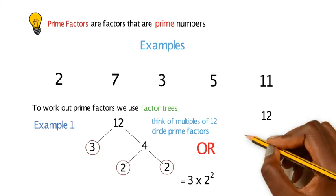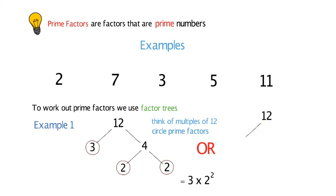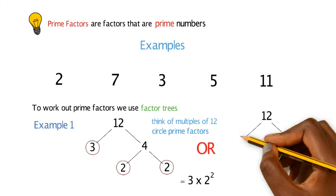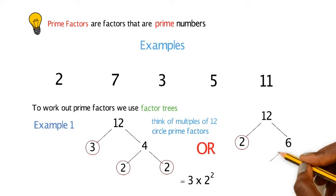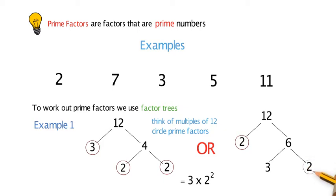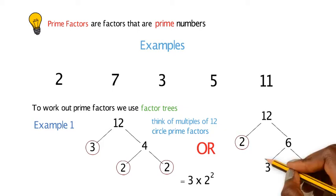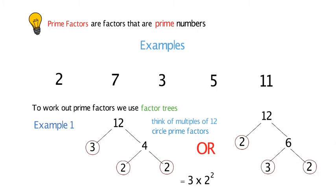Again, if we have 12, factors of that could be 2 and 6. Again, 2 is a prime number, so we're going to circle that. But 6 isn't, so we need to break it down further. That could be broken down into 3 and 2 again. Notice how you still have the same answer. It doesn't matter which route you take, as long as you get the same answer.